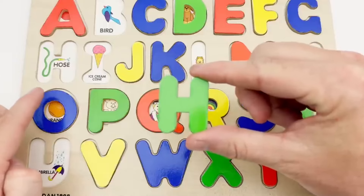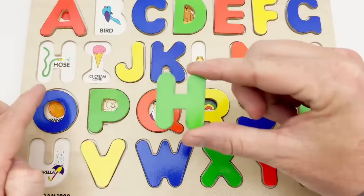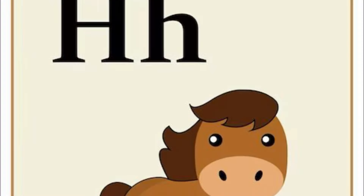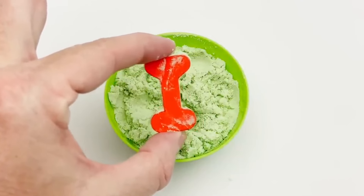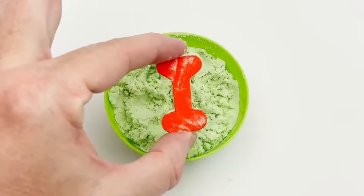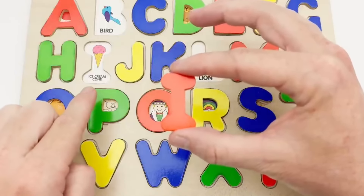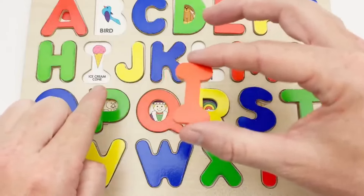It goes over here. H is for hose. I. Our red I goes here. I is for ice cream.